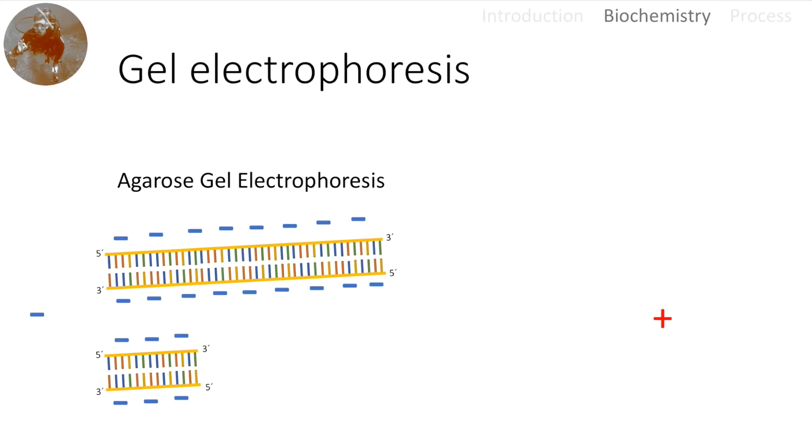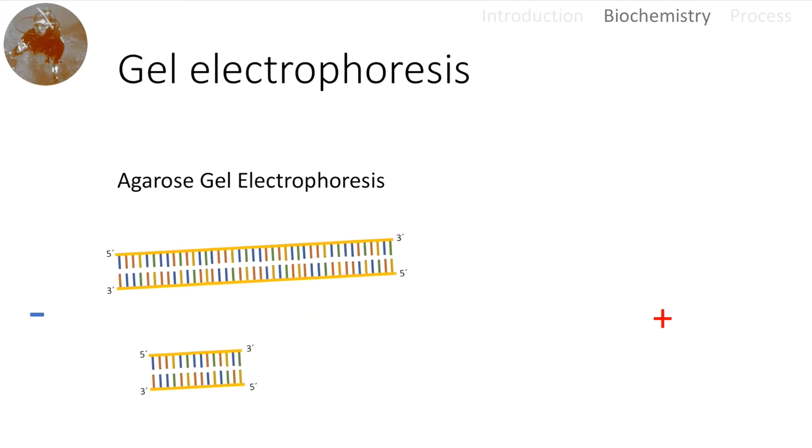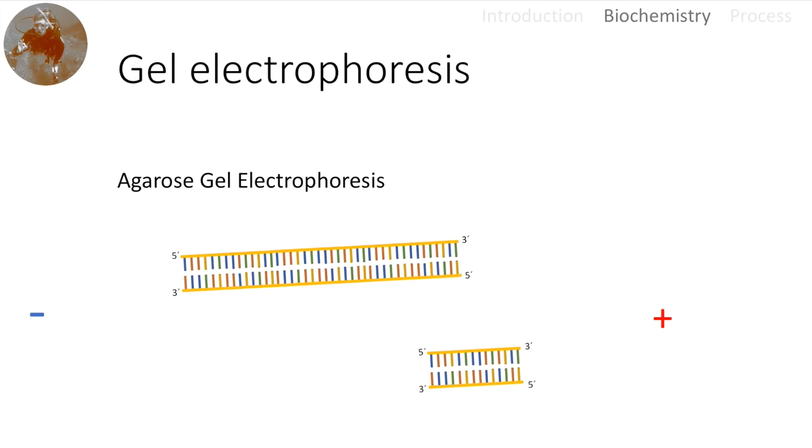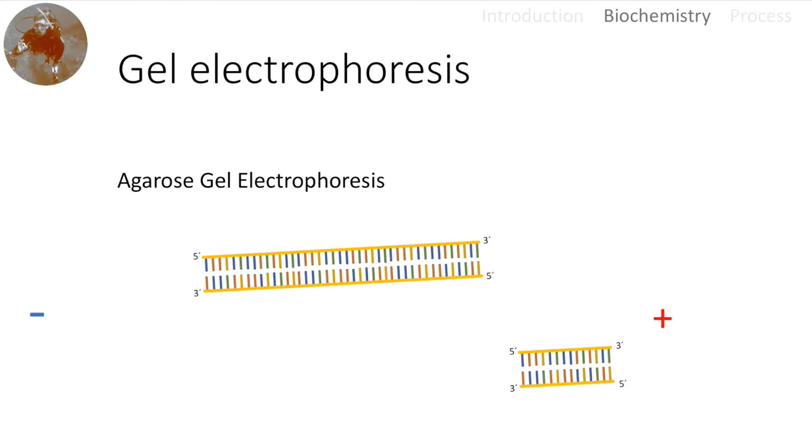Both are negatively charged due to the phosphates in the backbone. But since we have this network out of agarose sugars, smaller fragments can get better through the net, whereas it would be harder for the larger fragments to get through the gel. If we think of the fisher's net, tiny fish can easily escape whereas sharks for example can't really get through the net.